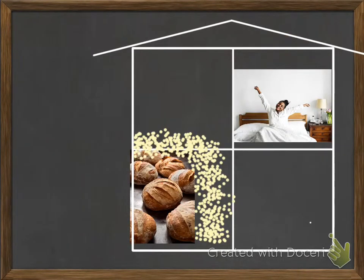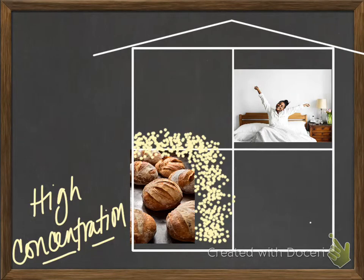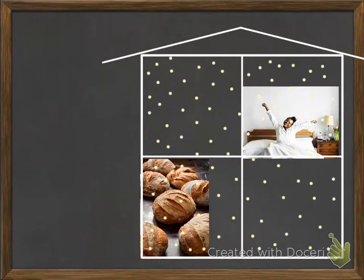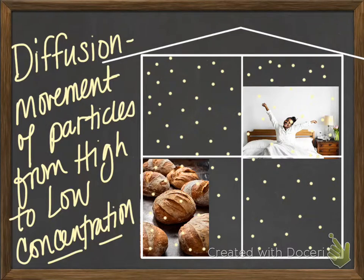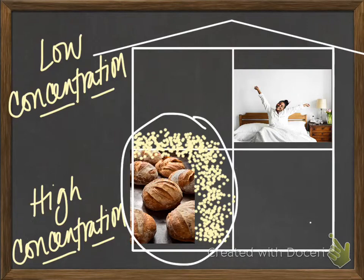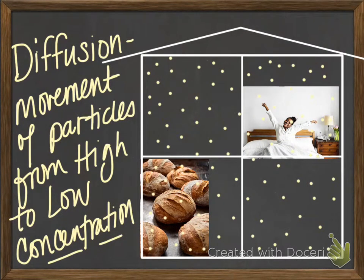Now let's think about something more pleasant. Waking up to the smell of fresh baked bread — you really can't beat that. You don't sleep in the kitchen, and nobody bakes bread in your bedroom, so how can you smell the bread all the way up there? All those smell particles — the tiny pieces of chemicals associated with bread — shouldn't they be down in the kitchen? Well, that's where they started, in an area of high concentration of what we'll call bread particles. But since the rest of the house was an area of low concentration, those bread particles spread out and took up all the space. This is diffusion: the movement of particles from an area of high concentration to an area of low concentration.